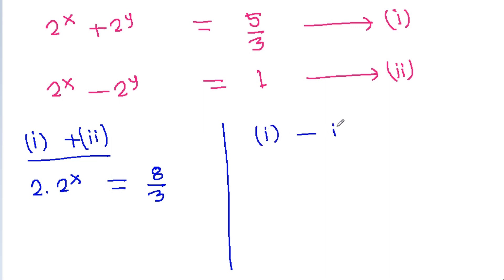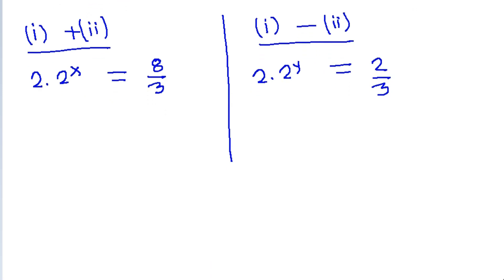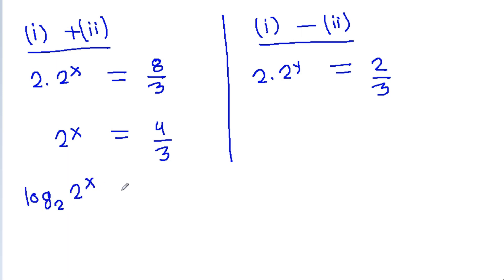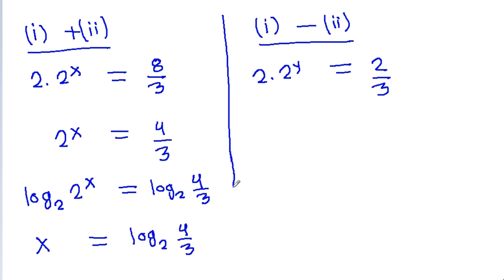And if we subtract equation 2 from equation 1, then we will get 2 times 2 power y is equal to 5 by 3 minus 1, which will be 2 by 3. And here we can get 2 power x is equal to 4 by 3.